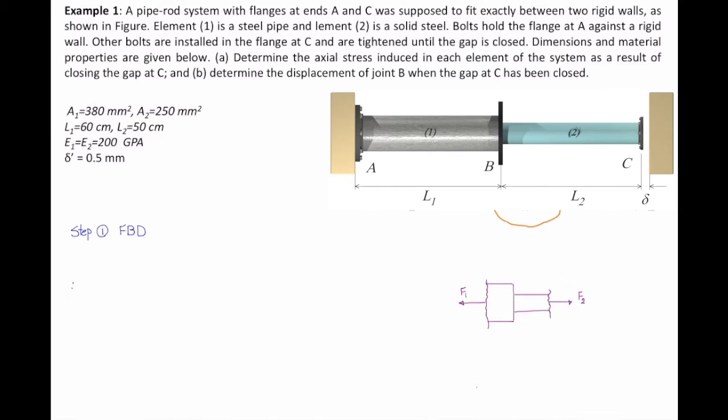There would be one unknown force in element number one, which goes to the left because that faces outward from the cut section. And there would be another force, F2, that goes to the right because that faces outward from the surface again.